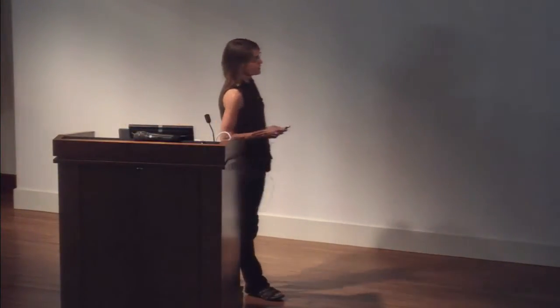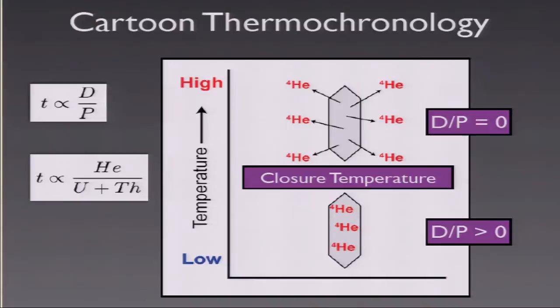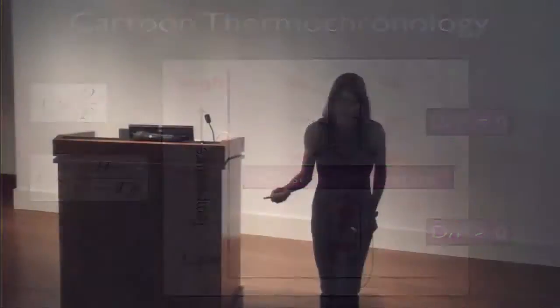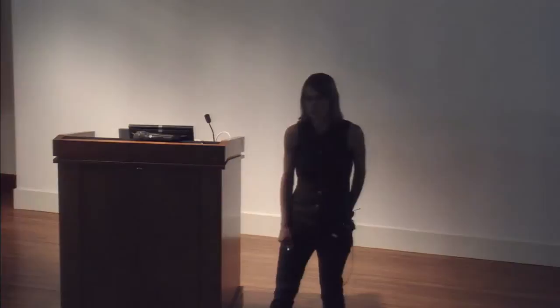An important point: for thermochronometers, the primary crystallization age of your mineral does not necessarily matter that much. For example, I've worked on samples from the Acasta Gneisses — some of the oldest known rock in the world — and the Barberton Greenstone Belt. The crystallization age of those rocks may be 4 billion years old. But as long as that sample has had the opportunity to be heated to temperatures sufficient to lose the helium, the helium date you obtain has nothing to do with the crystallization age. It's telling you something about the much younger cooling history. The thermochronometer system is largely decoupled from the primary crystallization age of the mineral.